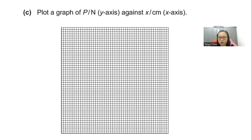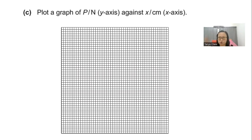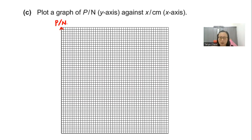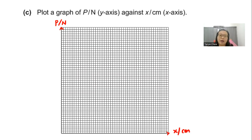This is a graph that is given. Use a pencil and ruler to plot your graph. On your Y axis, use your ruler to draw a straight vertical line and label it as p slash N. And for your X axis, use your ruler to draw a horizontal line and label it as x slash cm. You gain one mark for that. How easy is that?